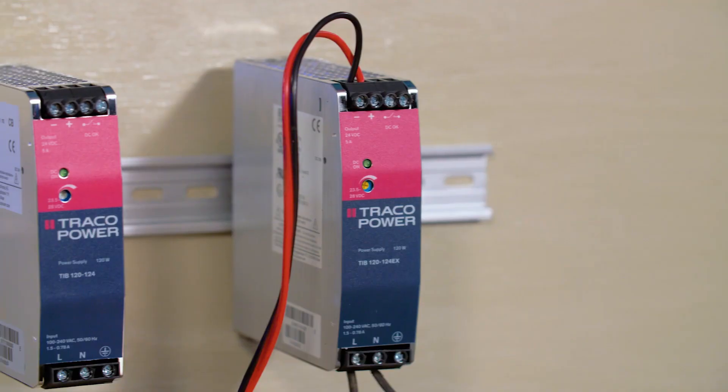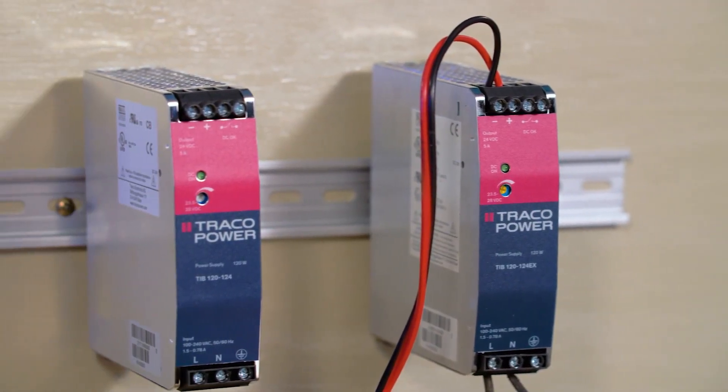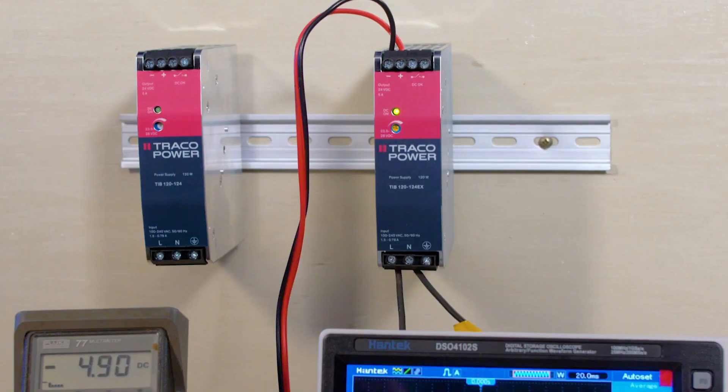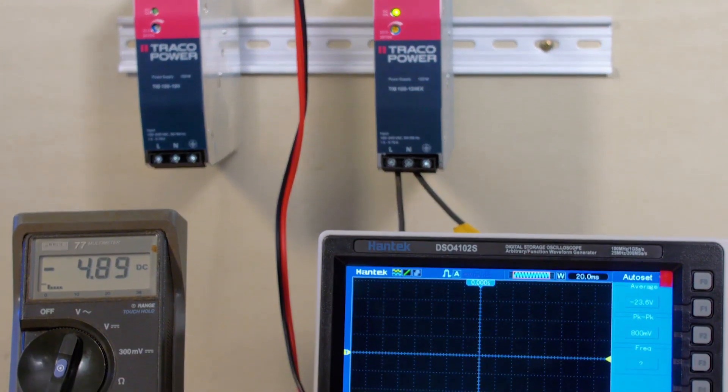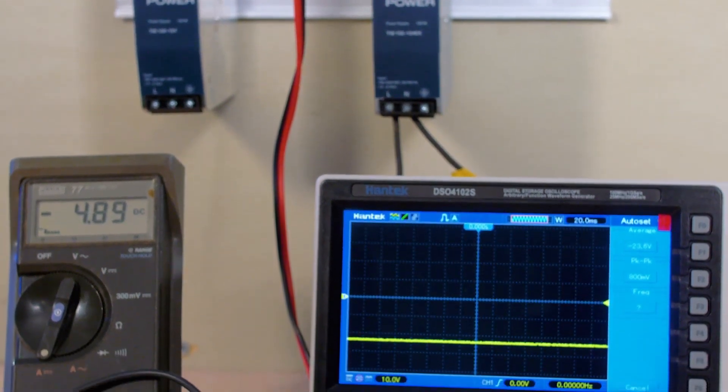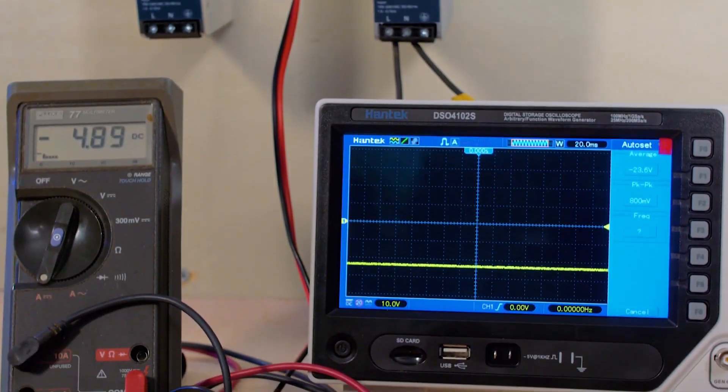One of these units is what's called an EX, designated for hazardous location requirements with UL Hazloc Class 1 Division 2 approval, ATEX certification, and it extends the standard warranty from 3 to 5 years.